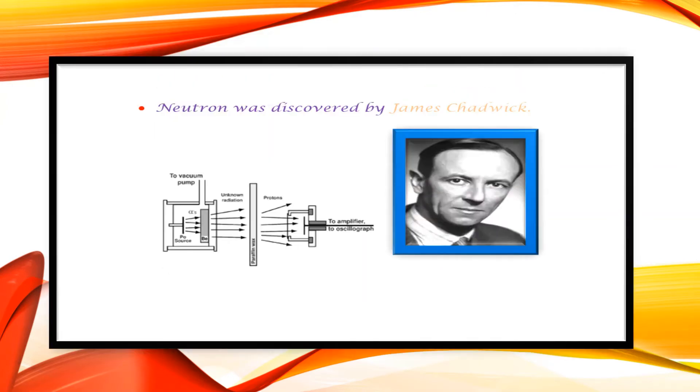Sir James Chadwick was a British physicist who was awarded the 1935 Nobel Prize in physics for his discovery of the neutron.